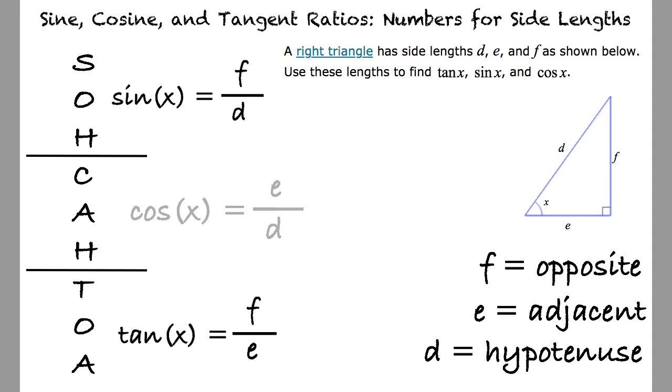Lastly, the cosine of x is represented by the adjacent over the hypotenuse, yielding e over d as its trigonometric ratio.